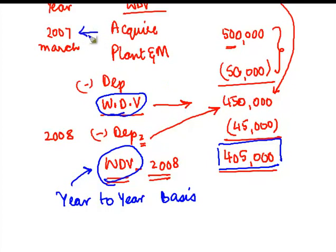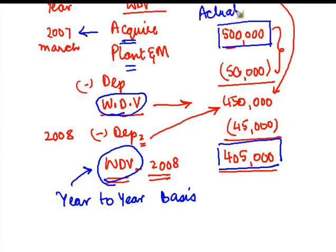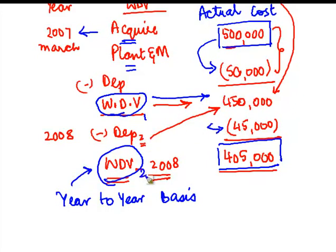In the first year when I acquired the plant and machinery, the written down value was not there — it was only the actual cost. Then as I moved forward, I charged depreciation and got written down value one. The next year I charged depreciation again and got written down value two.